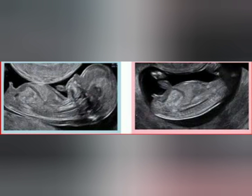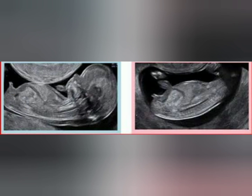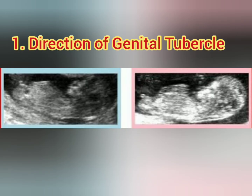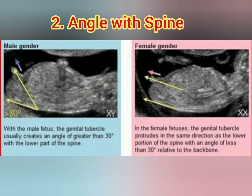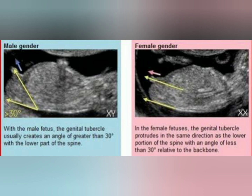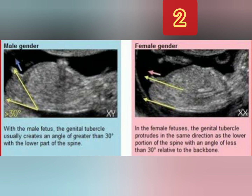First, you will scan the baby in the sagittal position and find the fetal spine and genital tubercle, as marked in this picture. Then try to focus on the direction of the genital tubercle — if it is towards the spine, it is a female child; if it is opposite to the spine, it is a male child. The second point is to measure the angle between the spine and the genital tubercle. If it is more than 30 degrees, the baby is male; if it is parallel to the spine or less than 30 degrees, it is a female child.